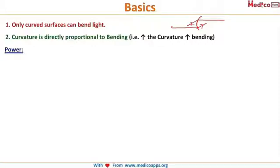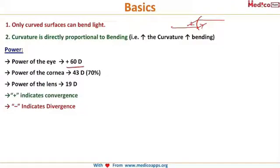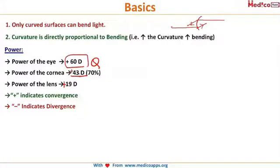The power of the eye is a whopping 60 diopters — plus 60 diopters. This can be an MCQ. The cornea contributes the major power with plus 43 diopters, which is 70% of the eye's refractive power, and the lens gives plus 19 diopters. The sum of these two is greater than 60, but the total power is only 60 because the distance between cornea and lens cancels some power.